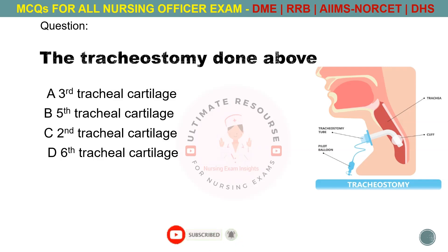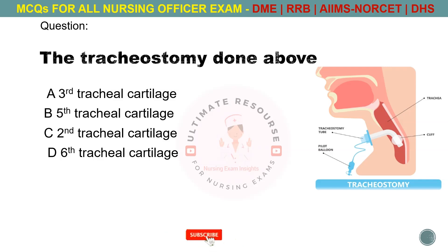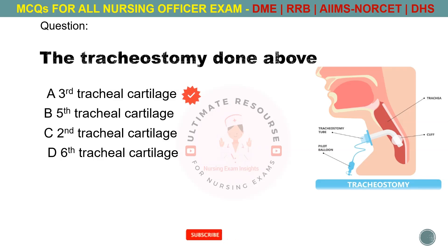The tracheostomy is done above. Options are A. Third tracheal cartilage, B. Fifth tracheal cartilage, C. Second tracheal cartilage, D. Sixth tracheal cartilage. The answer is A. Third tracheal cartilage.